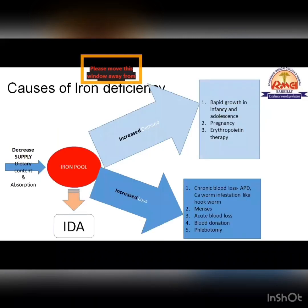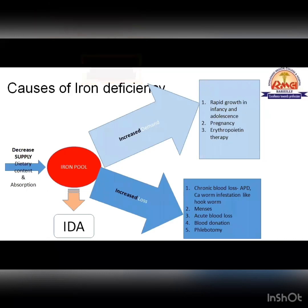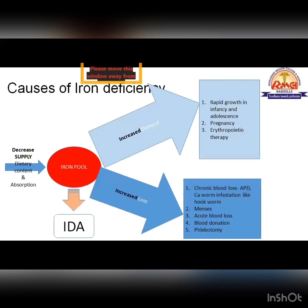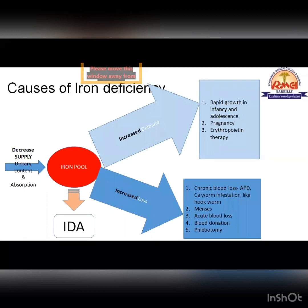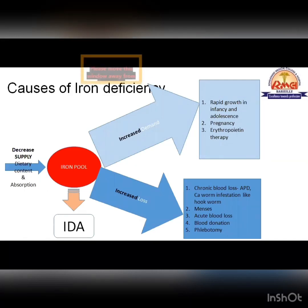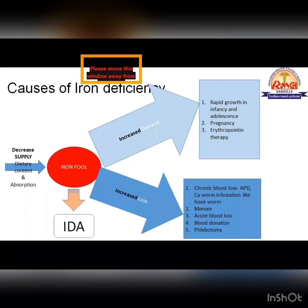The second part is increased demand or loss. Demand increases when a patient is growing very fast — infants and adolescents grow rapidly, so their iron requirement increases. Pregnancy involves growth of the fetus inside the womb, so the requirement is very high and iron is shunted toward the fetus. If erythropoietin is given, it stimulates erythroid hyperplasia; the rapidly dividing erythroid cells mobilize iron, increasing demand, which leads to deficiency if not properly supplemented.